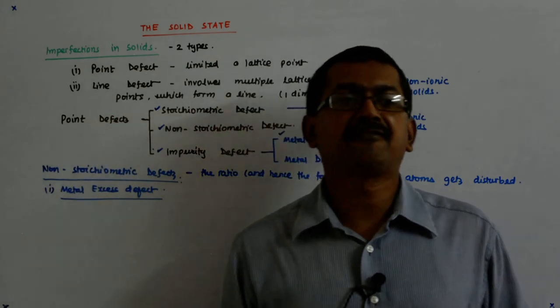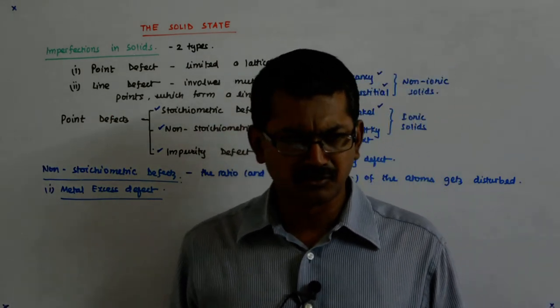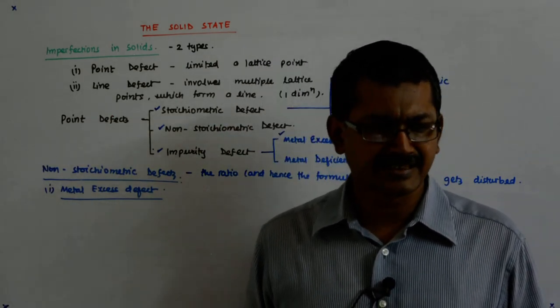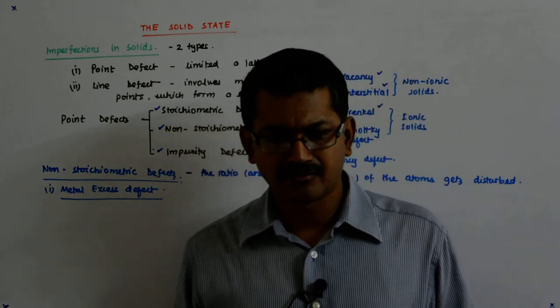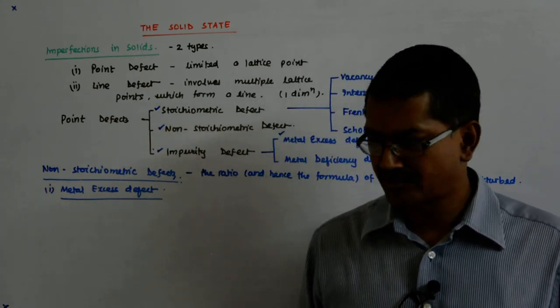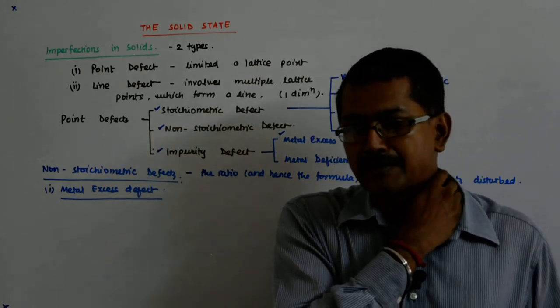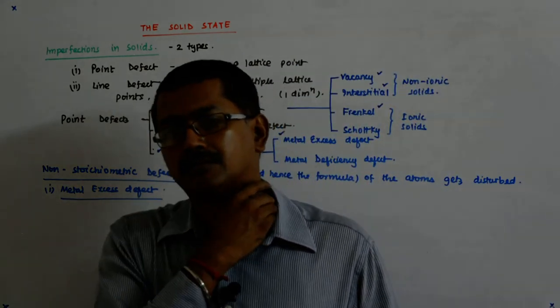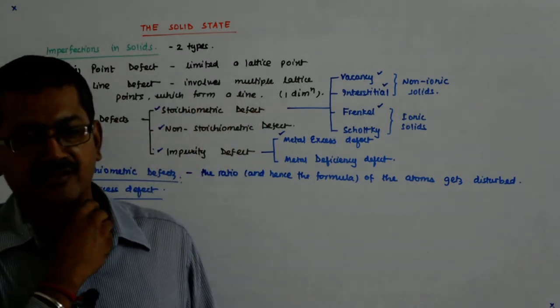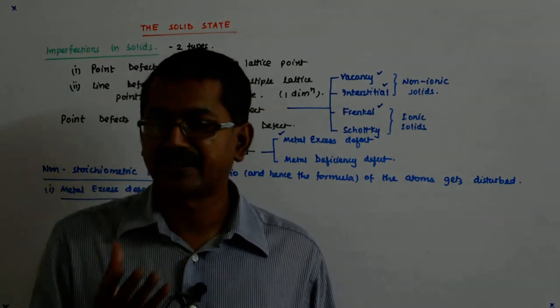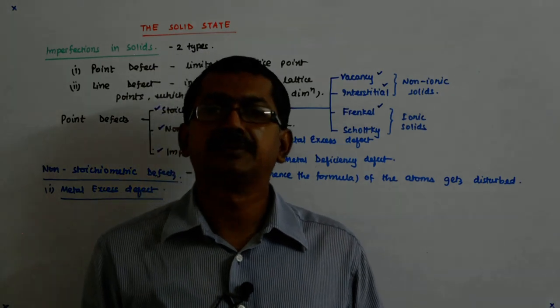This is called an F center. It's a German word, Farbenzenter or Farbzenger center. Farbenzenter means the color center.